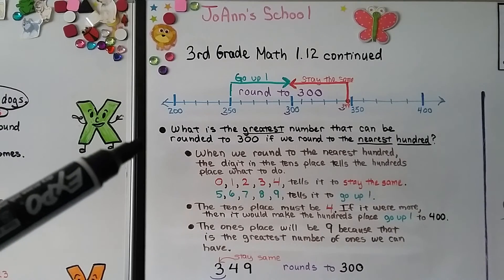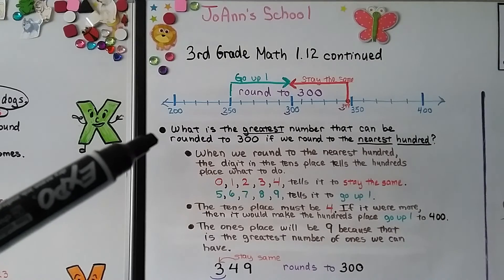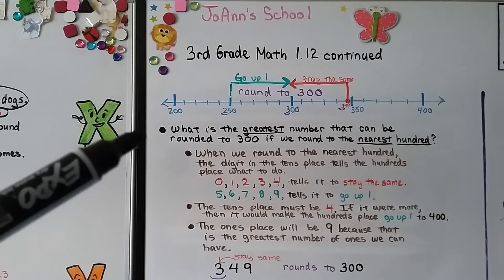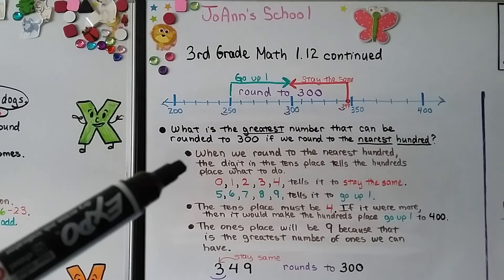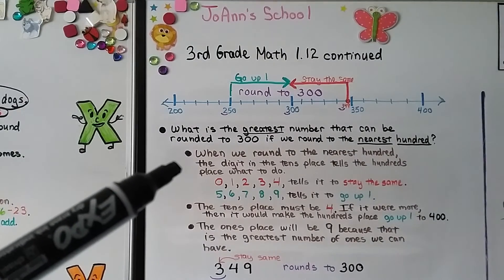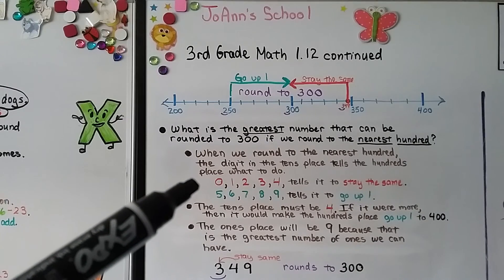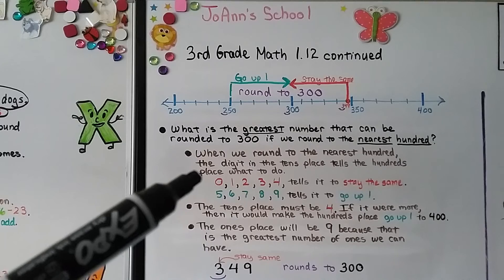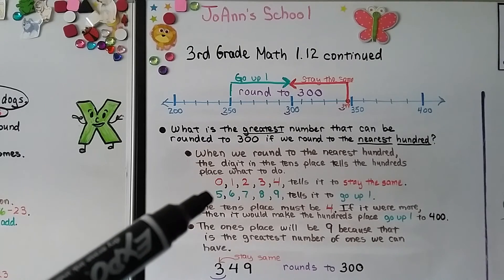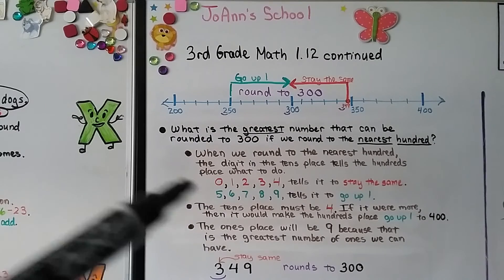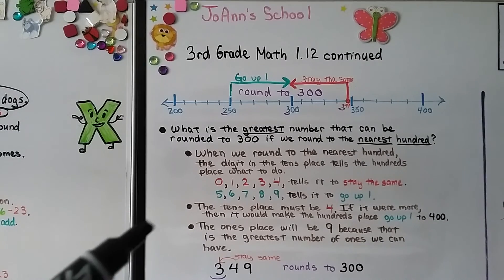What is the greatest number that can be rounded to 300 if we round to the nearest hundred? When we round to the nearest hundred, the digit in the tens place tells the hundreds place what to do. If it's a 0, 1, 2, 3, or 4, it tells the hundreds place to stay the same. If the tens place is a 5, 6, 7, 8, or 9, it tells the hundreds place to go up 1. So the tens place must be a 4.